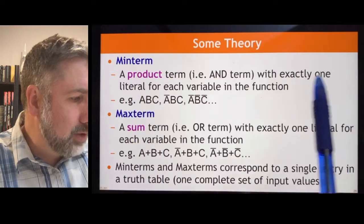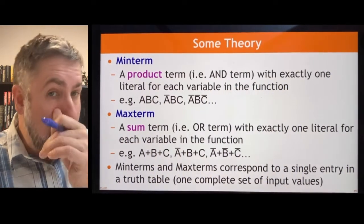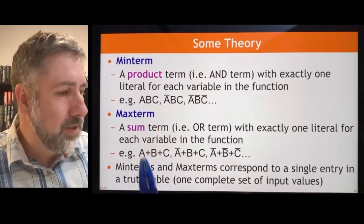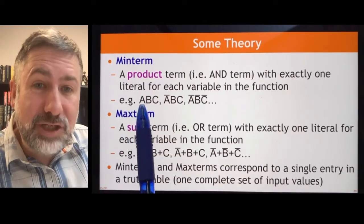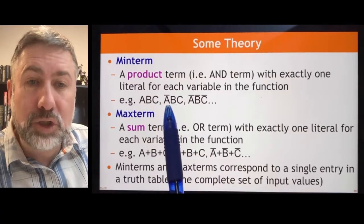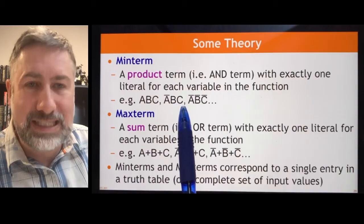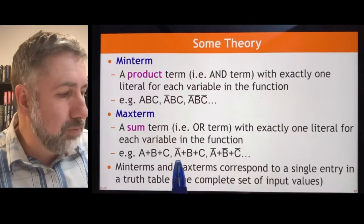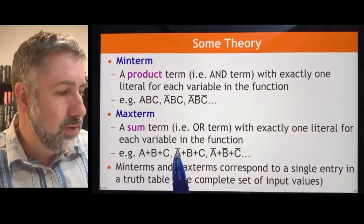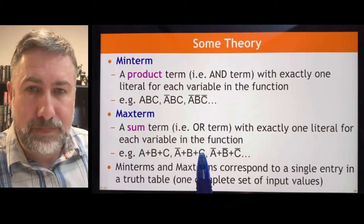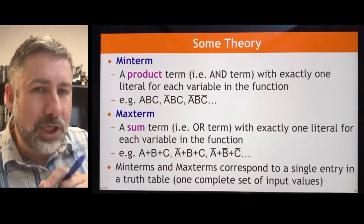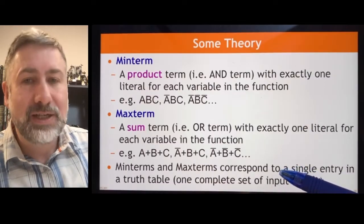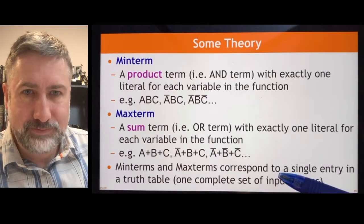Min terms are a product term with one literal for every variable, and a max term is basically the opposite — the inverse. It's a sum term, an OR term, with one literal for every variable. A product term like this is true if each individual literal is true, so this one will be true only if a is false, b is true, and c is true. A max term, because it's OR, will be false only if all the inputs are false — so this one will be false only if a is false, b is true, and c is true. This represents a single input combination, and whether the min term or max term exists in the functional representation tells us whether that input results in a 1 or a 0.